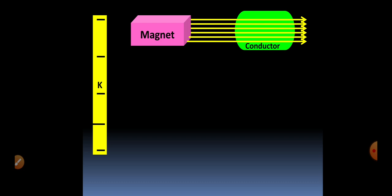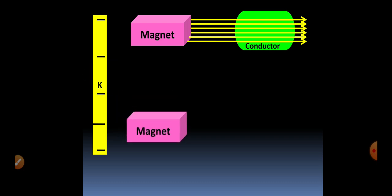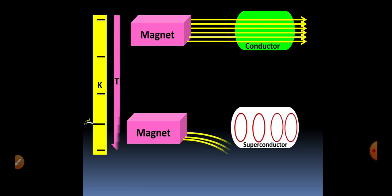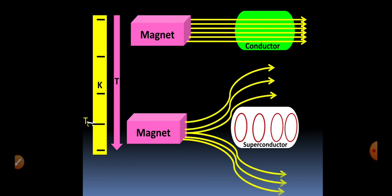The magnetic lines of force of a magnet pass through a conductor. On the other hand, when a superconductor is kept in an external magnetic field, the magnetic lines of force are expelled or repelled. This means that superconductors are perfect diamagnetics. This is known as the Meissner effect.